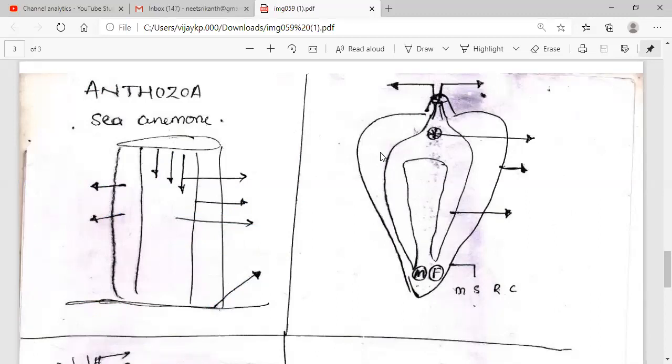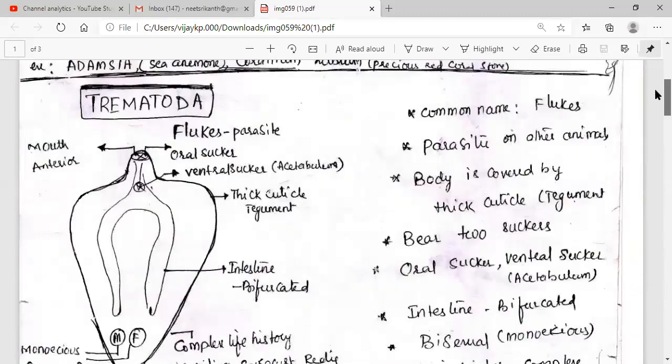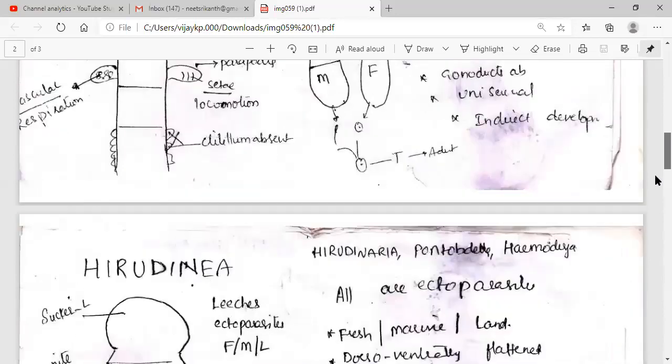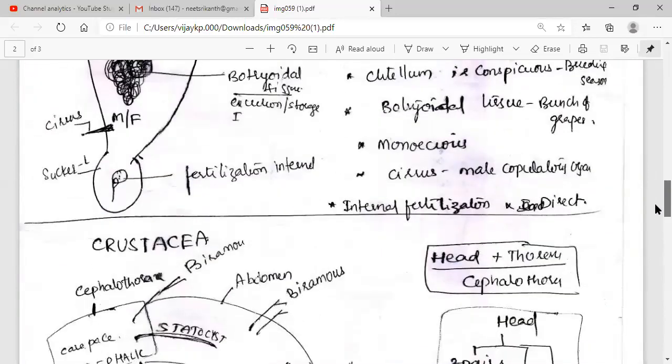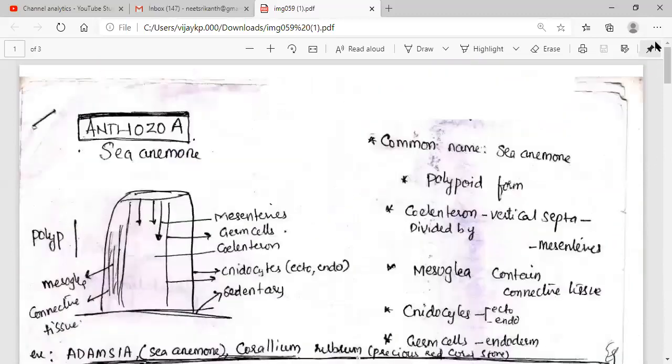So when phylum Platyhelminthes comes, we will go with Trematoda. Trematoda belongs to phylum Platyhelminthes and Annelida, Polychaeta and Oligochaeta. So these are very important for examination point of view. That's why I made some mind maps with them. So we have completed Anthozoa today, that's why we made it, and then we continue with the remaining also in the coming class.